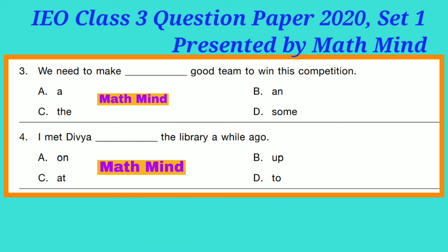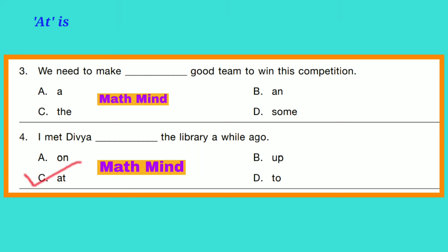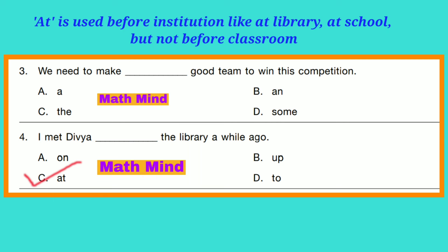Question 4: 'I met Divya dash the library a while ago.' Option C is correct: 'at.' 'At' is used before institutions like library, school, office. Correct answer: 'I met Divya at the library.' Similarly, 'at the school.' But note: 'at' is not used before classroom — it would be 'in the classroom.'